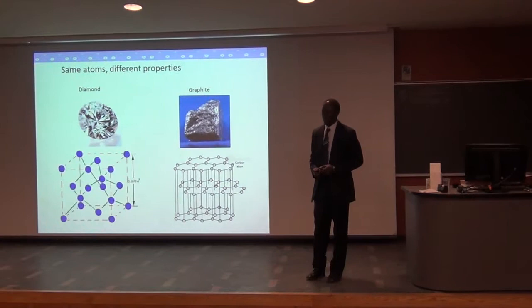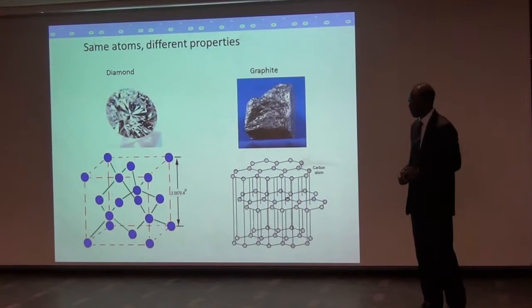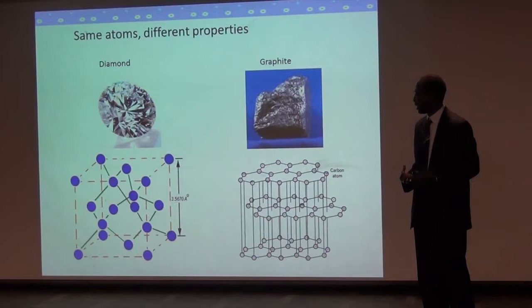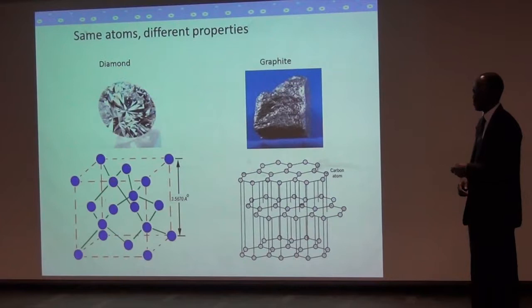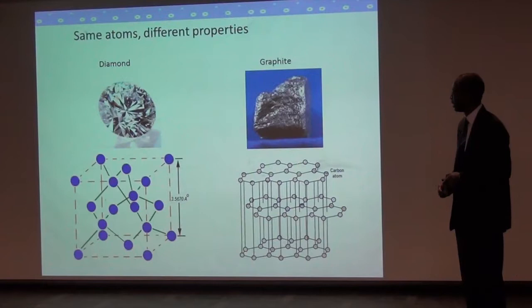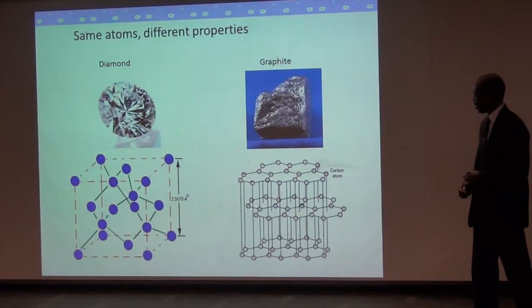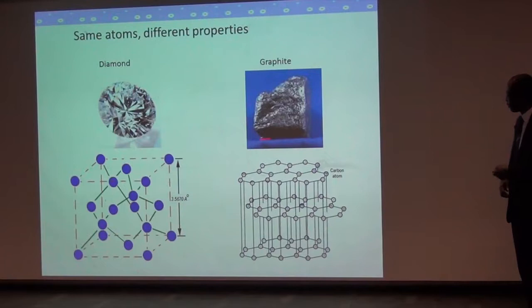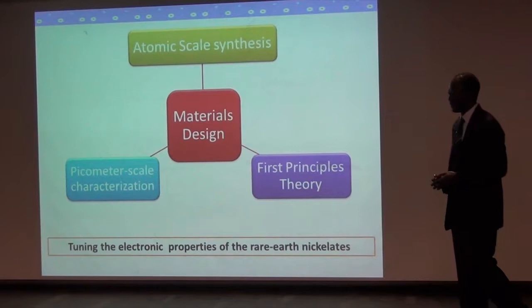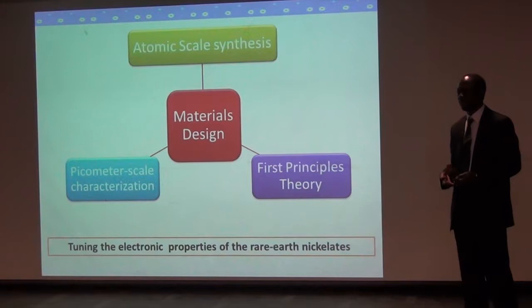By way of introduction, the world around us is full of many examples of materials which have the same group of atoms forming their basic unit, but these materials will have vastly different microscopic properties simply because of how the atoms are arranged at the atomic level. A very good example is carbon, which can manifest itself as shiny expensive diamonds when the carbon atoms are arranged in a particular crystal structure, or as dark, currently very useful graphite from which you can get graphene when these same carbon atoms arrange themselves in hexagonal lattices.